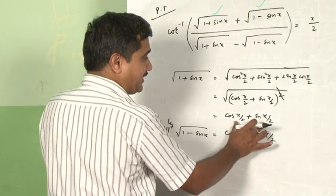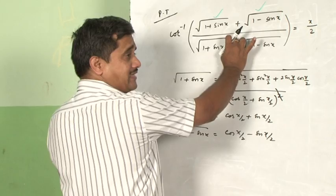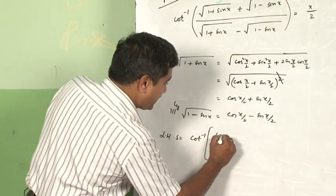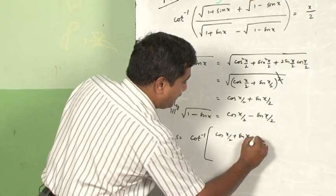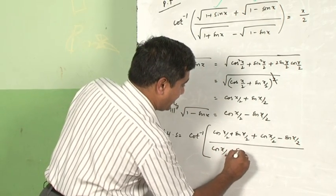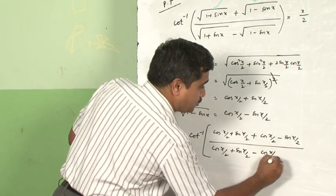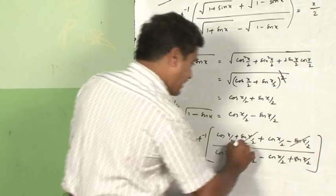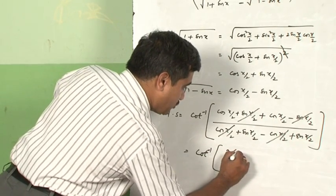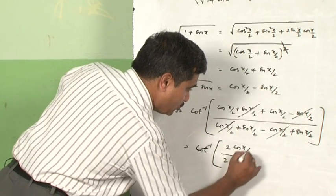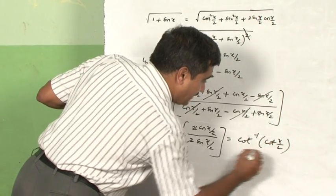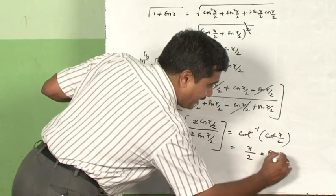Substituting these two values into the cot inverse expression on the LHS: the numerator becomes (cos(x/2) + sin(x/2)) + (cos(x/2) − sin(x/2)) = 2cos(x/2), and the denominator becomes 2sin(x/2). The 2s cancel, giving cot⁻¹(cos(x/2)/sin(x/2)) = cot⁻¹(cot(x/2)). The cot⁻¹ and cot cancel, giving x/2, which is the required RHS.